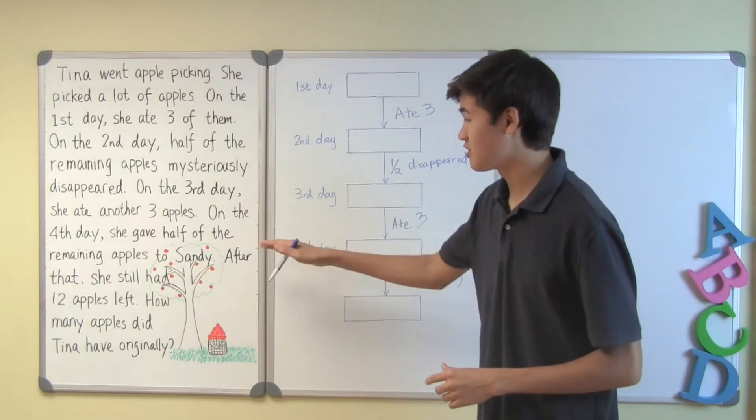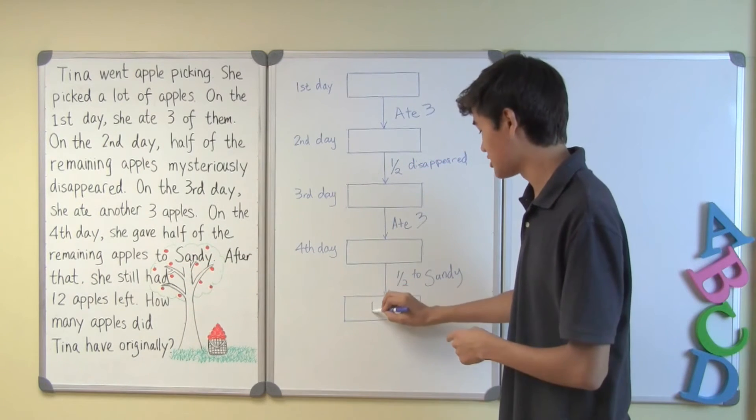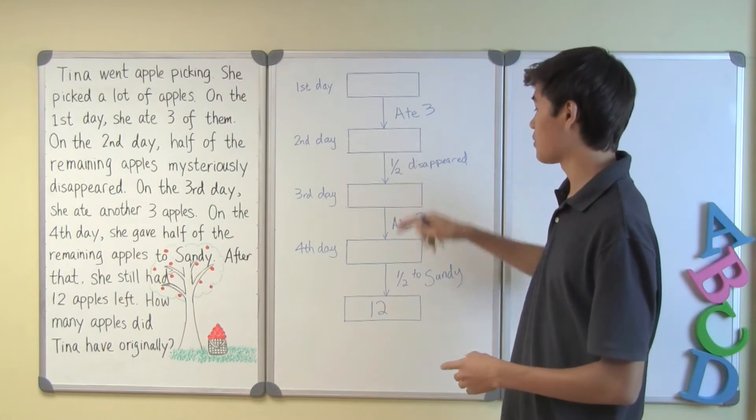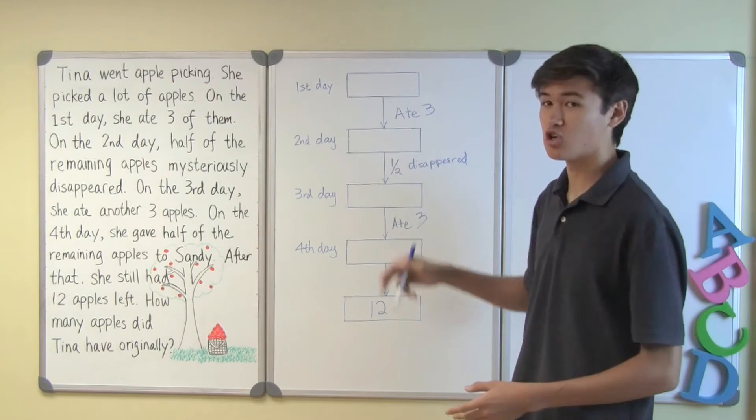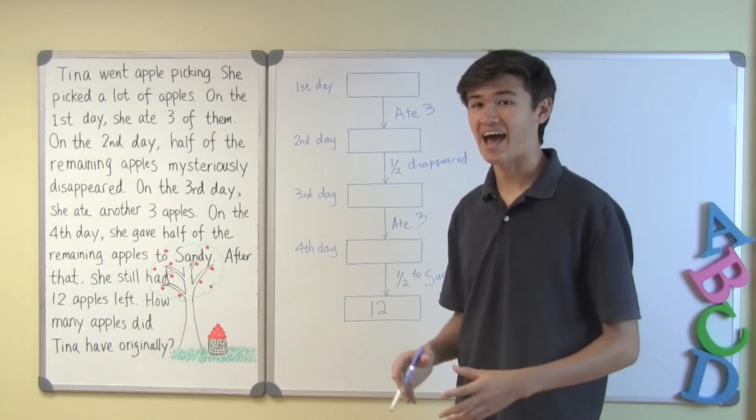The question tells us that after that she still had 12 apples left. So we're actually given the information that goes in this box, but we're not given the information for the rest of the boxes. So now we must work backwards in order to solve the question, which is how many apples did Tina have originally.